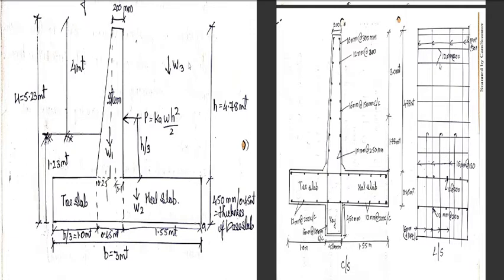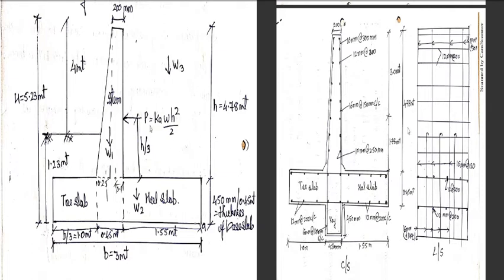In the longitudinal section cut, you can see 16 mm diameter bars at 150 mm center-to-center in the inner zone, and 300 mm center-to-center spacing in the outer zone. The bars coming through are 12 mm diameter bars at 200 mm center-to-center, and also 16 mm diameter bars at 150 mm center-to-center.